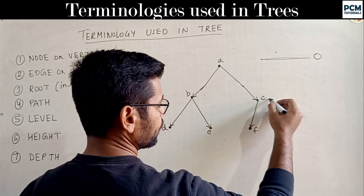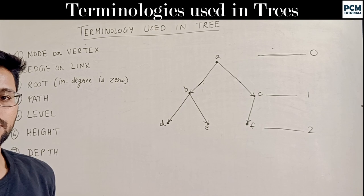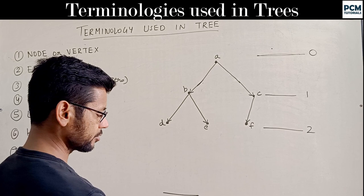The root is at level 0. The level of B and C is 1. The level of D, E, and F is 2. Next is height. Height is like ground level — we call it height.